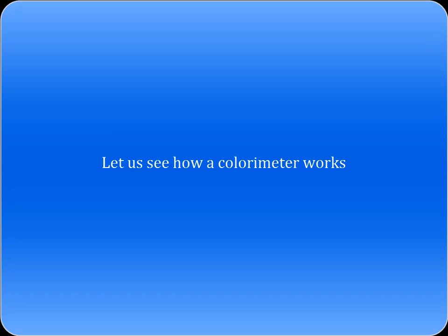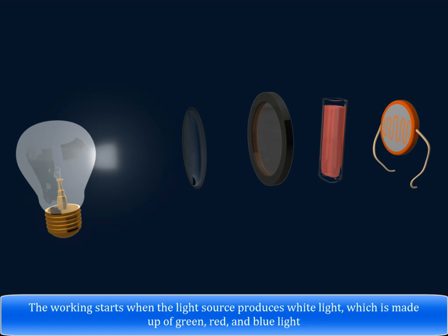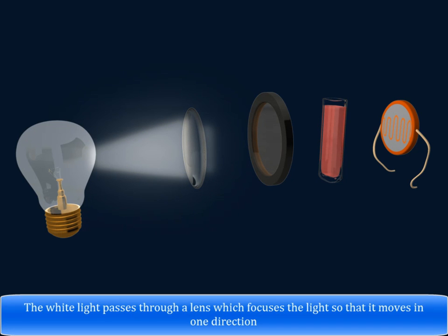Let's see how a colorimeter works. The working starts when the light source produces white light, which is made up of green, red, and blue light. The white light passes through a lens, which focuses the light so that it moves in one direction.